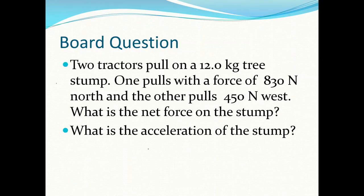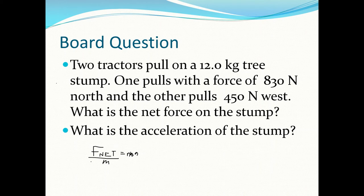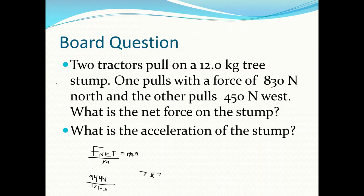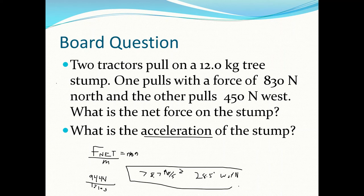Part two asks for the acceleration of the tree stump. Using F_net = ma, we already found F_net = 944 N and mass = 12 kg. So a = 944/12 = 78.7 m/s². Acceleration is a vector, so we include the direction: 28.5° west of north.